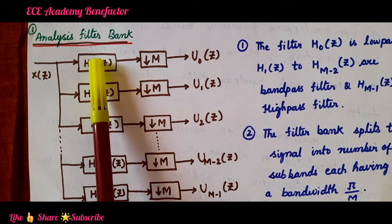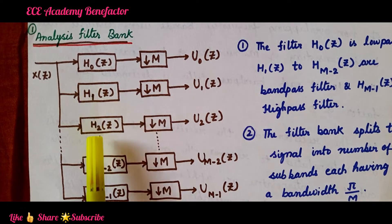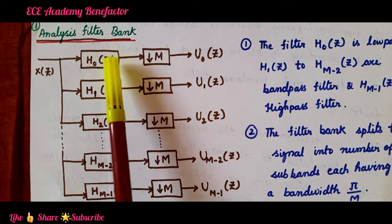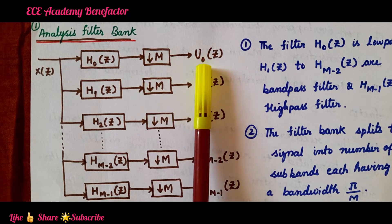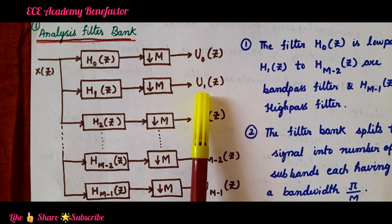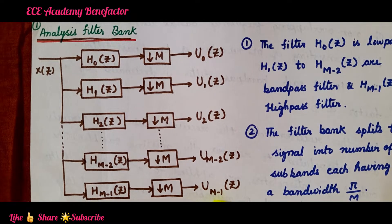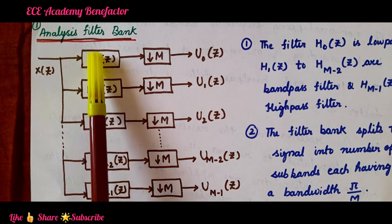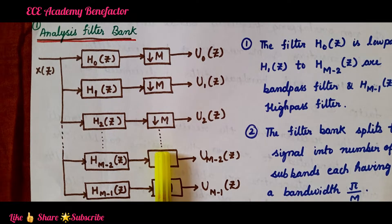The filters have transfer functions h0(z), h1(z), h2(z), h(m-2)(z), and h(m-1)(z). The output of each filter is down sampled by a factor of m to get output signals u0(z), u1(z), and u(m-1)(z). The input signal x(z) is passed through the Analysis Filter Bank and then down sampled.